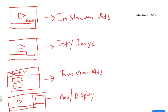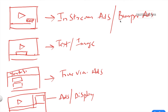When it comes to in-stream ads, you should also know about bumper ads. Bumper ads are very similar to in-stream ads, but they are not longer than six seconds. These have been the typical formats of ads we've been watching on YouTube all along.